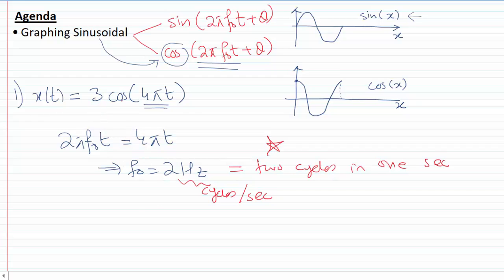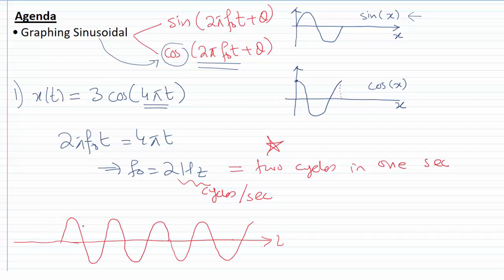Now that we have the frequency of 2 hertz, amplitude of 3, and we see there's no phase shift, we can start plotting our sinusoidal waveform. To do that, we plot the independent axis first and then we draw a cosine wave, populating it with the information provided: amplitude of 3, frequency of 2 hertz, and phase shift of 0.